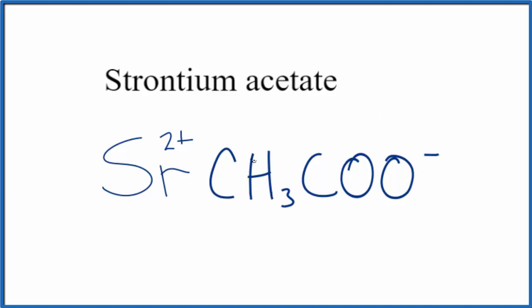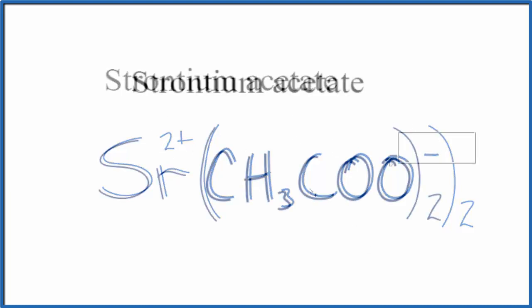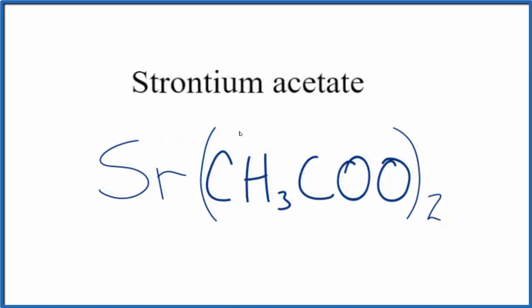The only way we can make that happen is to put parentheses around our acetate ion and put a 2 outside. Now we have 2 times 1-minus, which is 2-minus. That'll balance out the 2-plus and give us a net charge of 0. And this is the formula for strontium acetate.